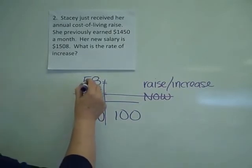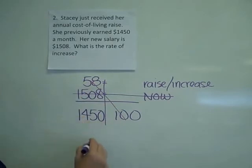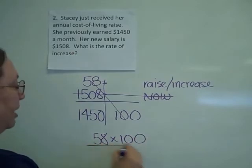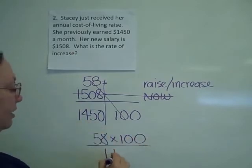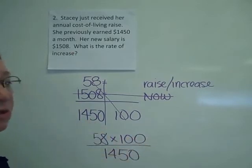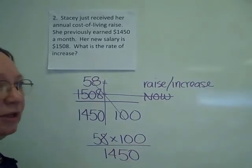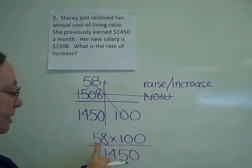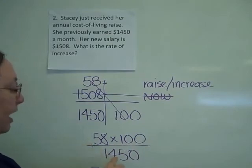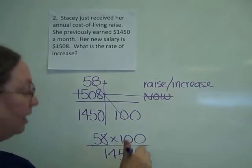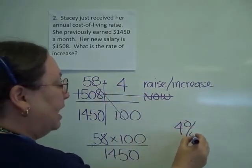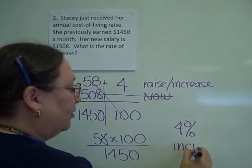Doing my cross multiplication, I'm going to take 58 times 100 divided by 1,450. This is also a problem that can be done on the calculator. You can punch into your calculator 58 times 100 divided by 1,450 and you will come up with 4, which means there was a 4% increase in her salary.